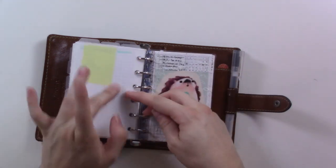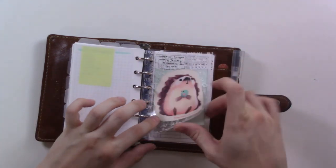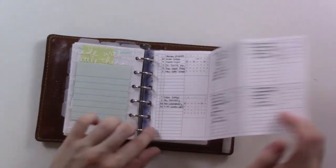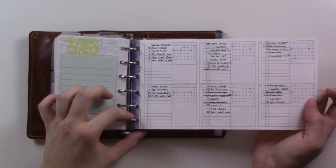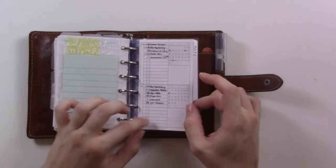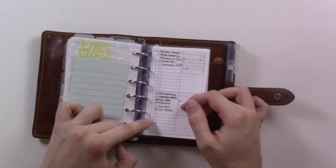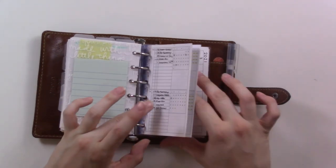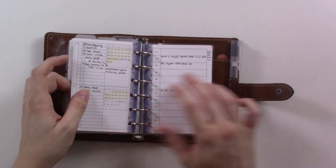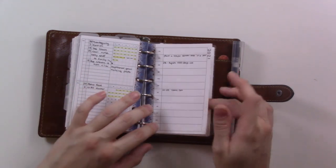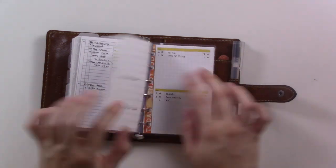Then the last section has my future log which is from Peanuts Planner Co's dated 2020 yearly bundle. She just released the 2021 one so that's available on peanutsplannerco.com. I always buy it on Black Friday because she puts out a coupon code and you can get it half price.